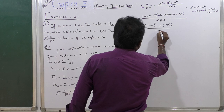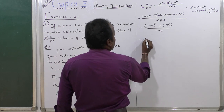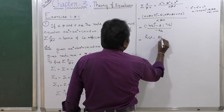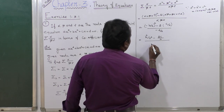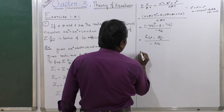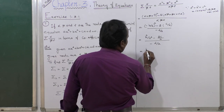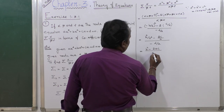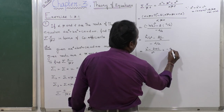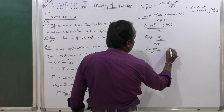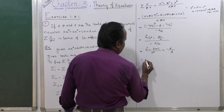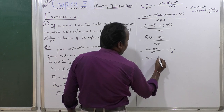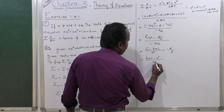Substituting: alpha + beta + gamma = −b/a, so the first term is (−b/a)² = b²/a². The second term is 2 times c/a. The denominator is alpha·beta·gamma = −d/a. So this equals (b²/a² − 2c/a) divided by (−d/a), which equals (b² − 2ac)/a² multiplied by (−a/d). Cancelling one factor of a gives (2ac − b²) divided by AD... simplifying to (2AC − B²) over AD.